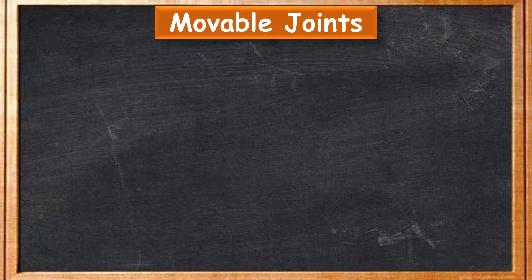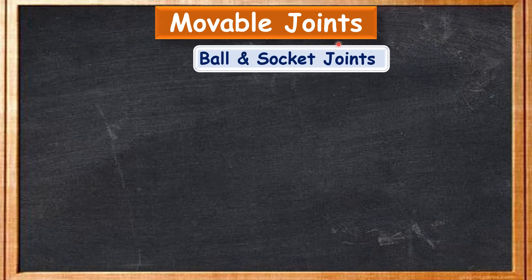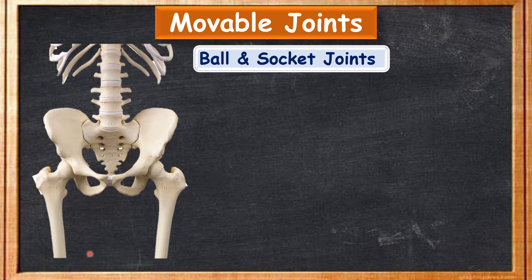After immovable joints, let's look at movable joints — joints that can be moved, that allow us to move. In this category we will first learn about ball and socket joints. These kinds of joints can be seen in our body in the pelvic girdle and pectoral girdle.